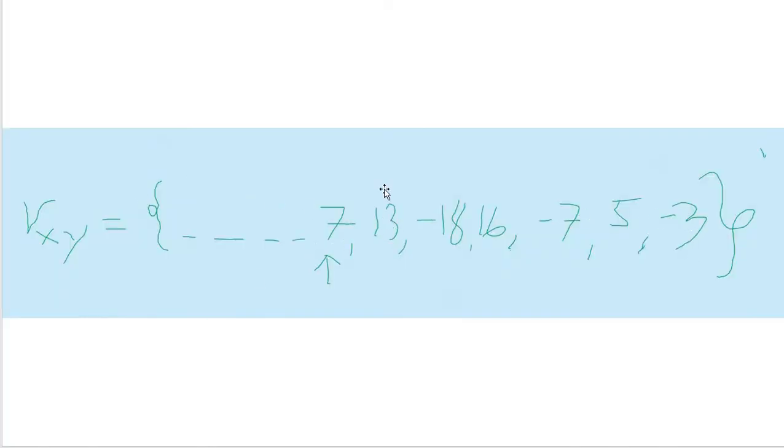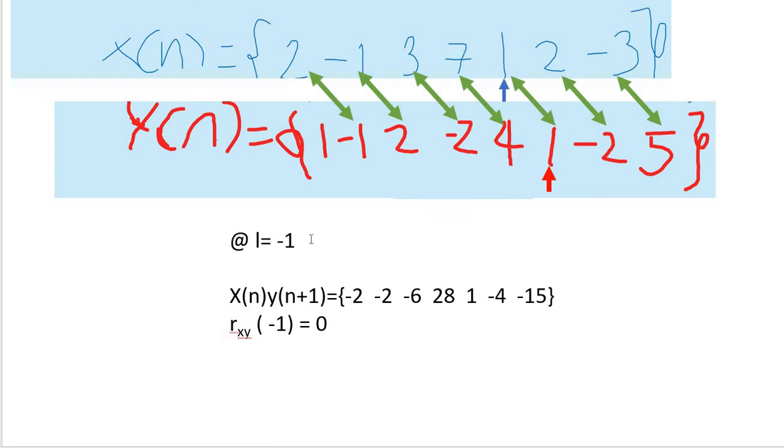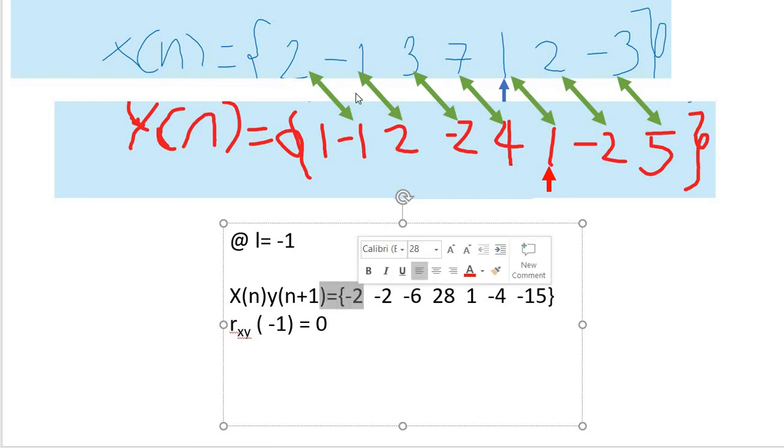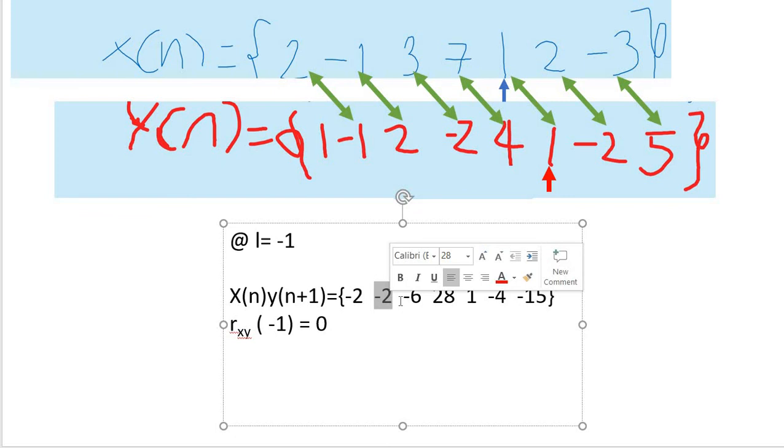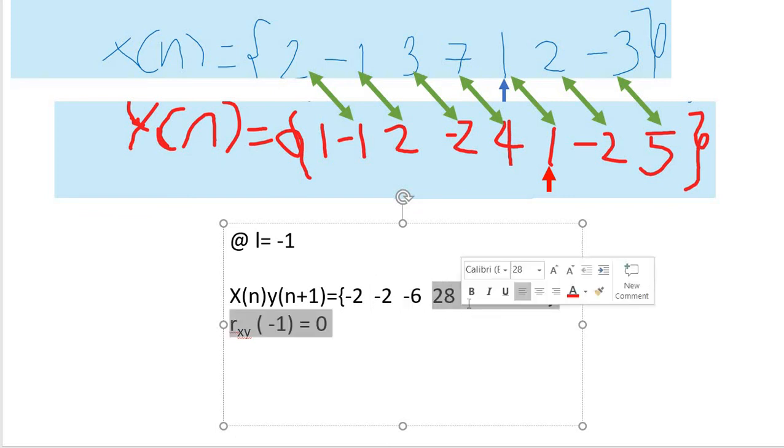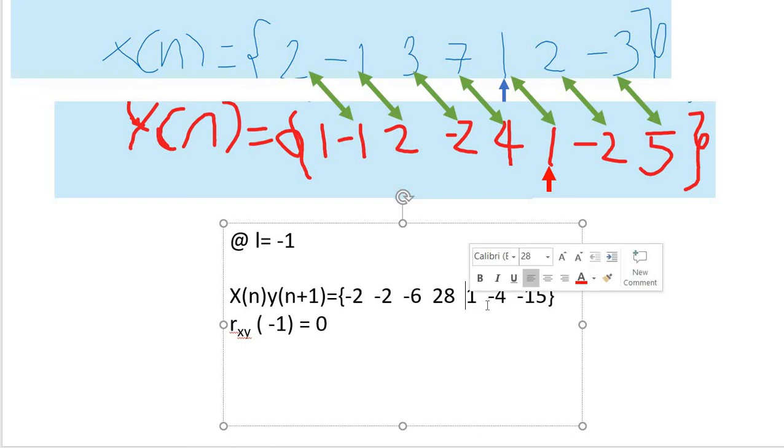If this would be positive, now we're going to move into the negative direction. So, at L equals -1, the result would be this. 2 times -1, the same process, would be -2, -2, -6, -28, 1, -4, and then -15. That's -1. If you take summation of all of it, it would be 0.